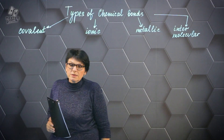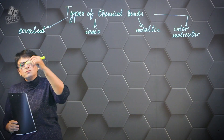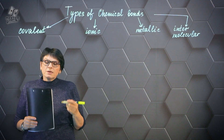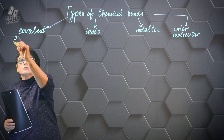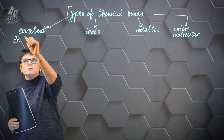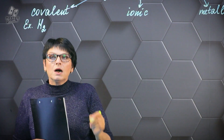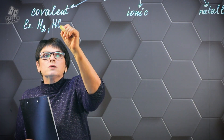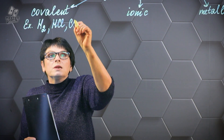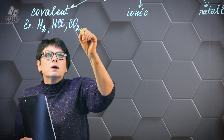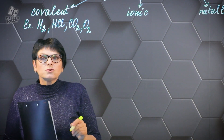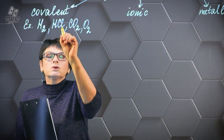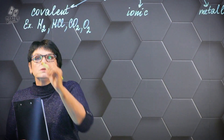Let's start with the covalent bond. We'll go in order to establish when this bond is formed, starting from specific examples. A covalent bond can be found in the hydrogen molecule H2, in a molecule of hydrogen chloride (HCl), in carbon dioxide (CO2), or in a molecule of oxygen (O2). If we ask what such a bond forms between, we can see that hydrogen, chlorine, carbon, and oxygen are all non-metals.